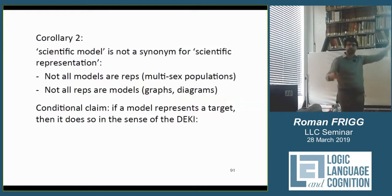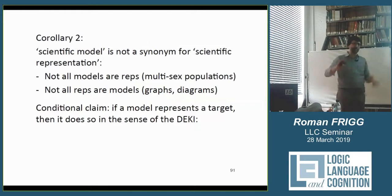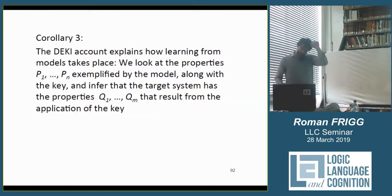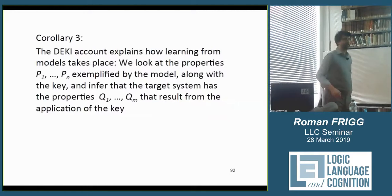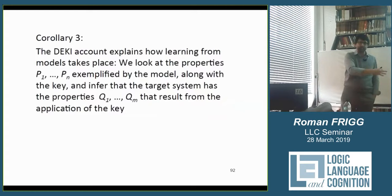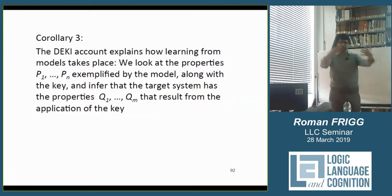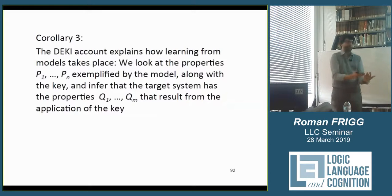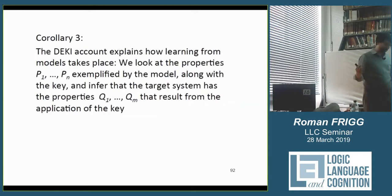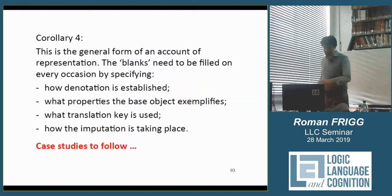The account explains how learning from models takes place. At the beginning I said representation in science has to explain how scientists learn from models. This account does that: you look at what properties are exemplified in the model, use your keys, ascribe the keyed-up property to the target, and then ask whether the target really has these properties — that's hypothesis testing. What I'm concerned with here is the semantic issue of how the Q properties get ascribed to the target; the account explains that nicely.